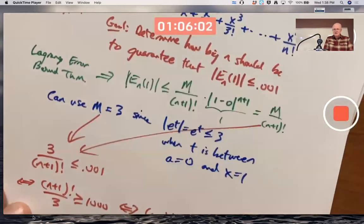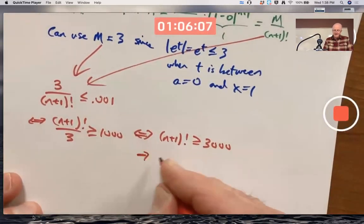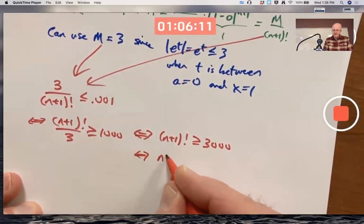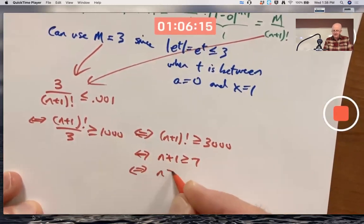In other words, since 7 factorial is 5,040, we could pick n to be greater than or equal, n plus 1 to be greater than or equal to 7, meaning n itself is greater than or equal to 6.